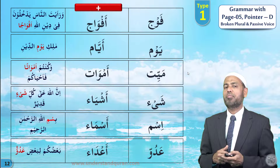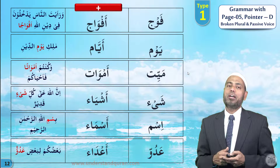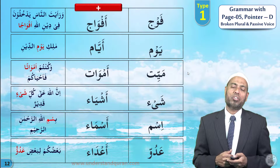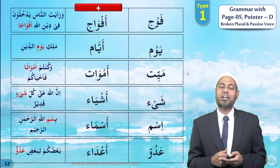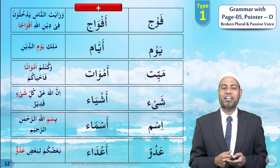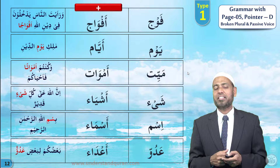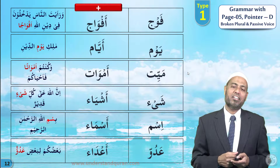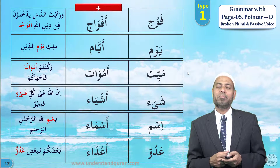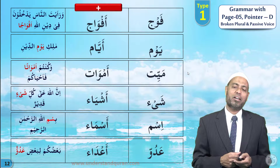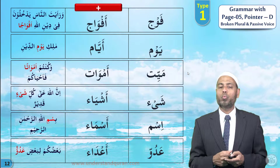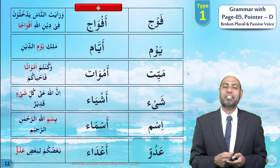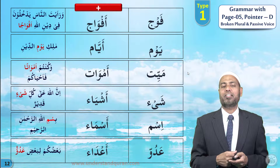Give me the plurals. Fawj — afwaj. Yawm — ayyam. Mayyit — amwat. Shay' — ashya'. Ism — asma'. 'Aduw — a'da'. MashaAllah.